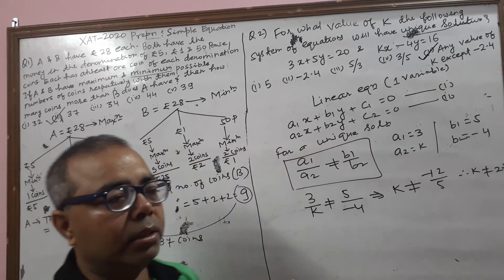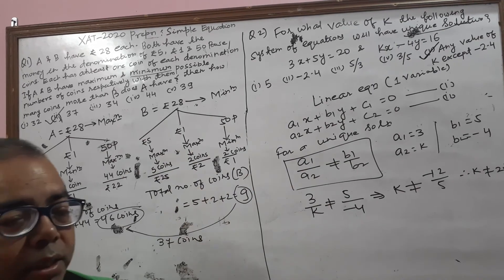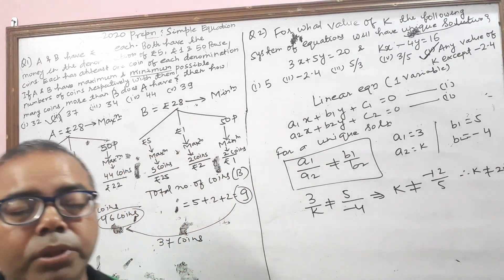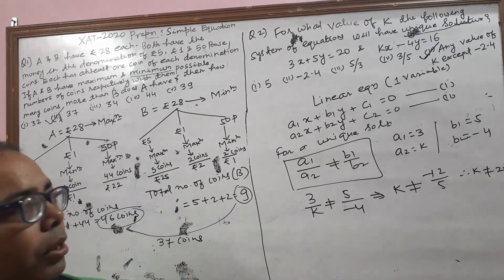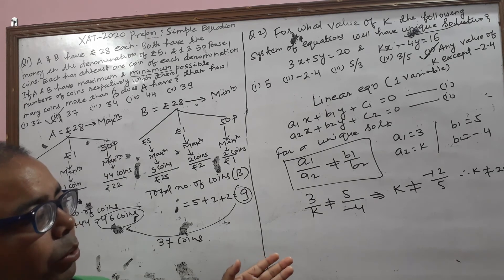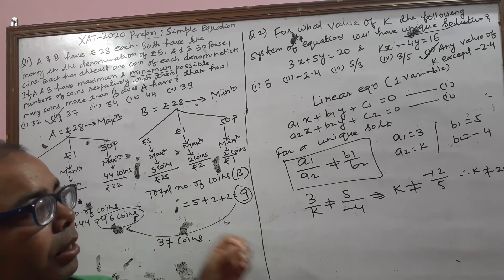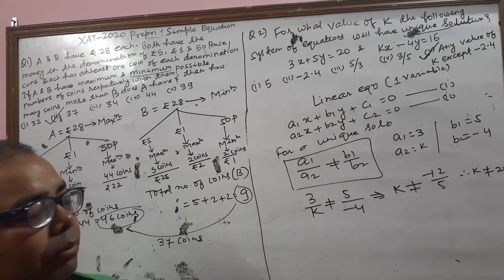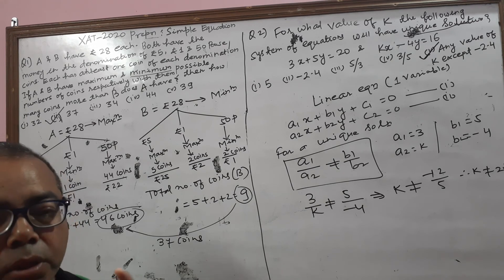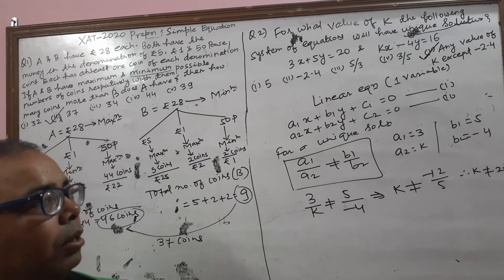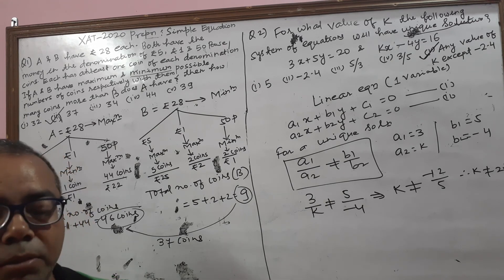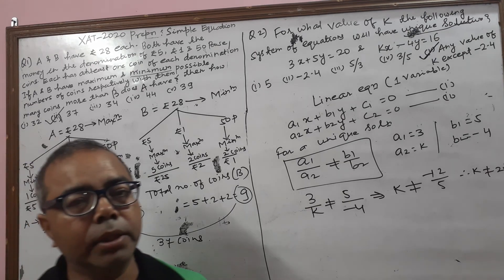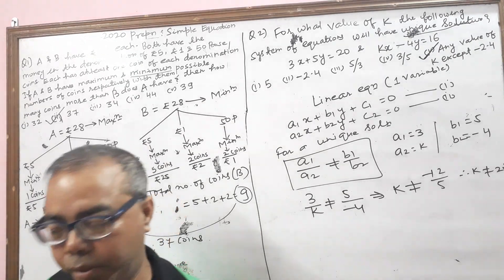So this is the condition we have to follow — whether it is a unique solution, infinite number of solutions, or no solution. In the unique solution, we have to put the value of K not equal to 2.4 in any condition, and we will get the unique solution. A unique solution will be exactly one solution. Hope that you like this video. Please subscribe. You will get more videos in the coming future. Thank you very much.